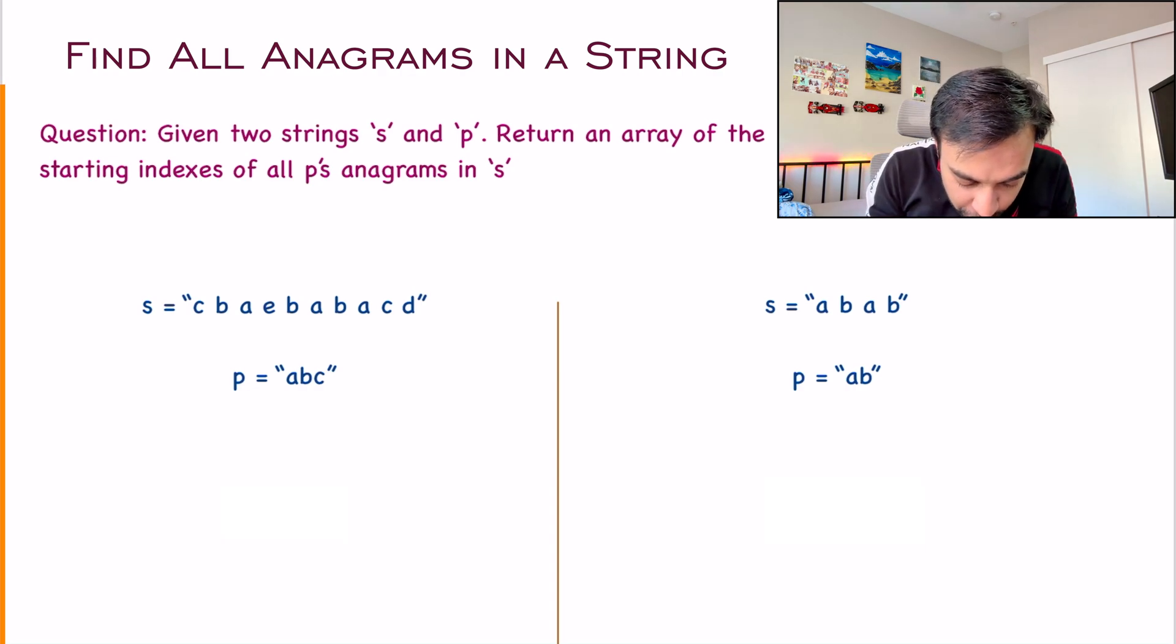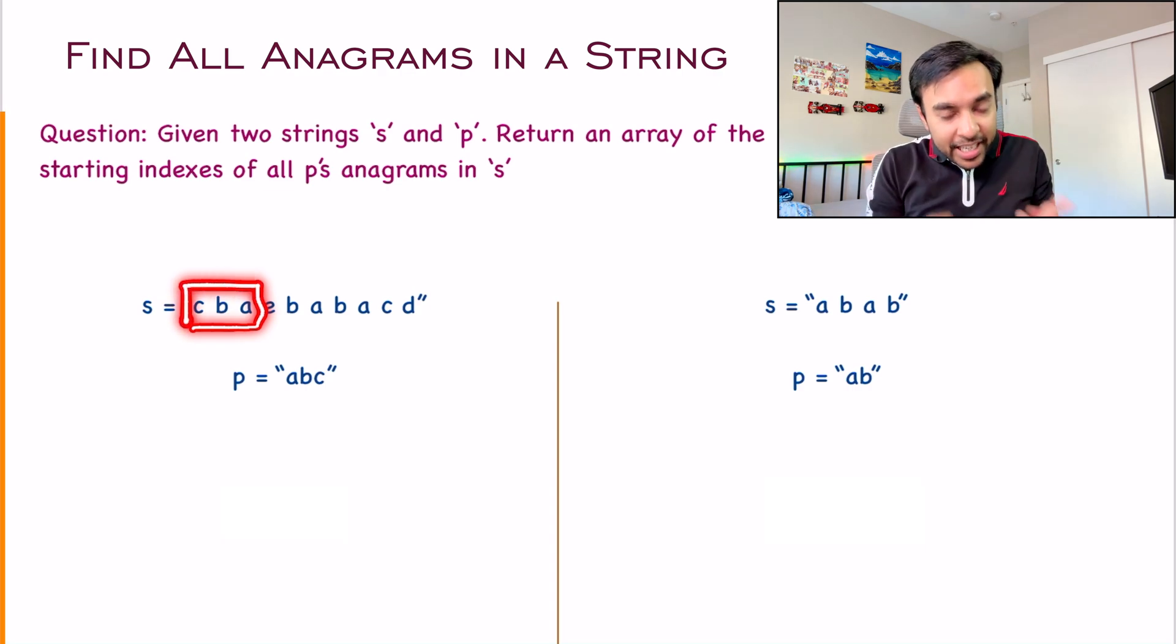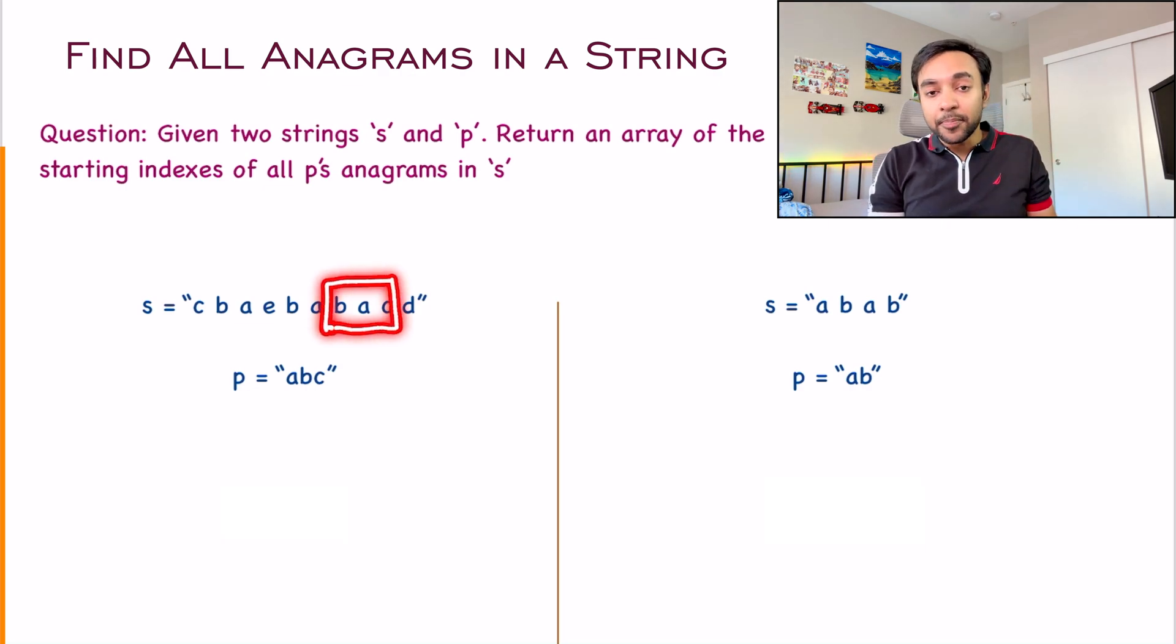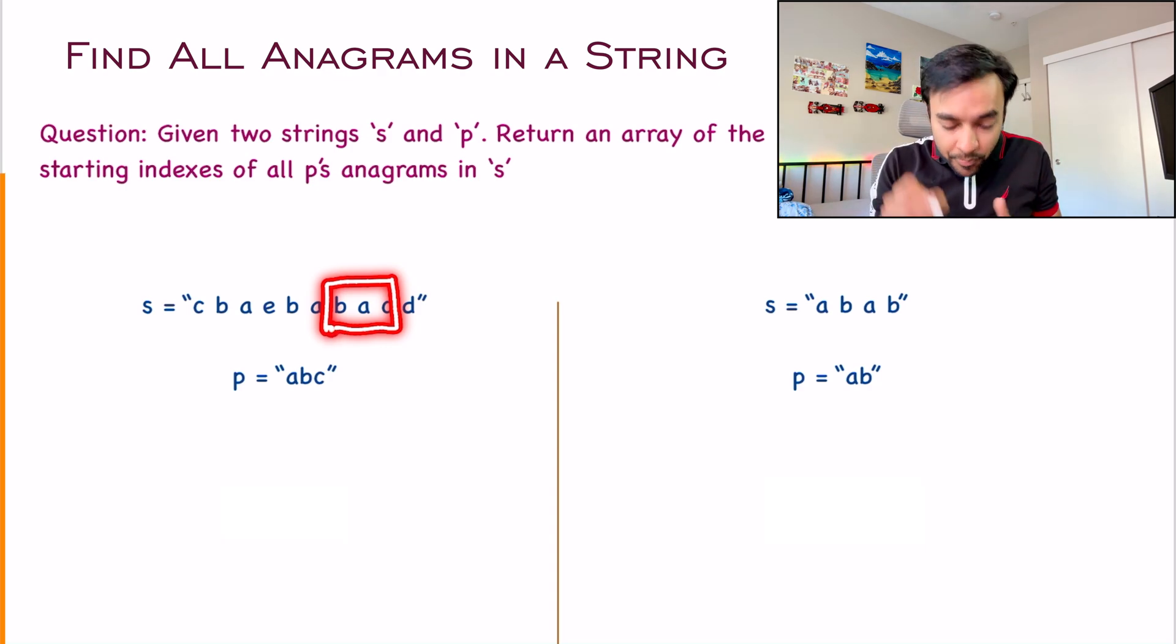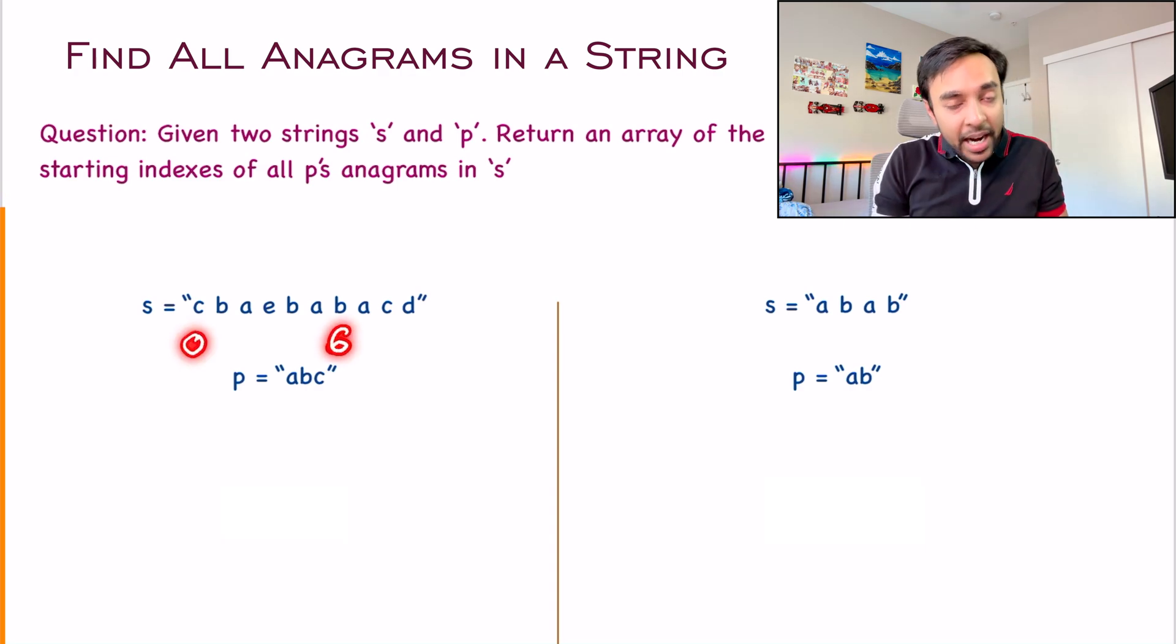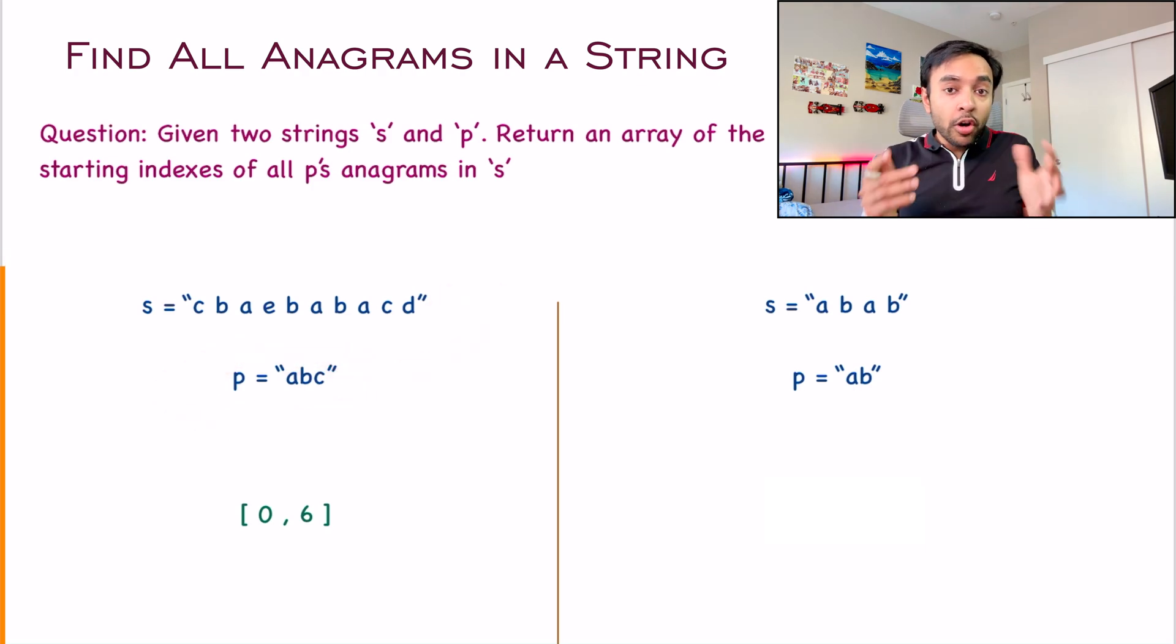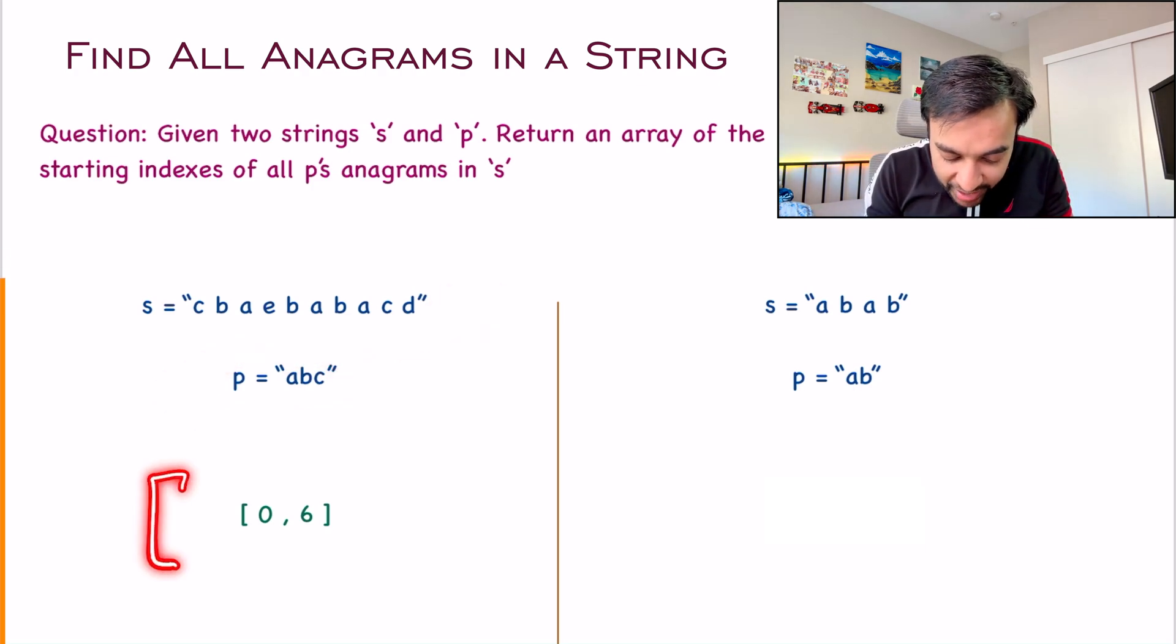If you check closely, when I start from the 0th position, I find the string CBA. This is an anagram. And once again, if I start at this particular position, then I find the anagram BAC. So at what indexes are you finding these anagrams? You found the first anagram at an index 0 and then you found the second anagram at index 6.